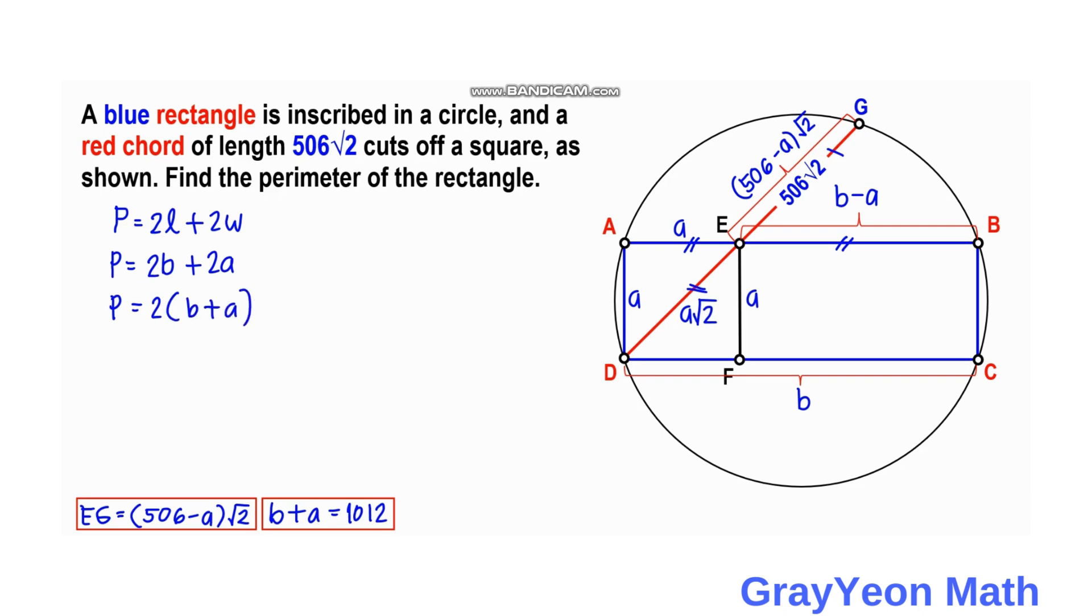But b plus a as we have got earlier is equal to 1012. So we simply substitute this. So 1012. We simplify that. So we have the perimeter to be 2024 units. And that is our answer.